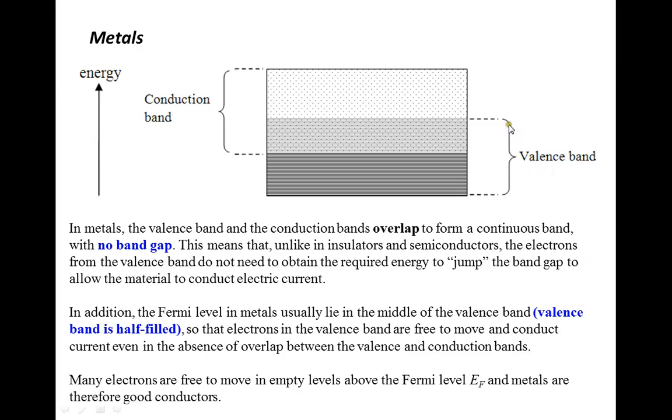In metals, the valence band and the conduction band overlap to form a continuous band, hence there is no band gap. This means that unlike insulators and semiconductors, the electrons from the valence band do not need to obtain energy to jump across a band gap because a band gap is not present.